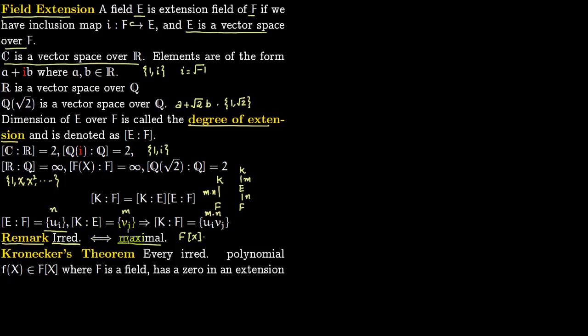then it has to be generated by a polynomial of lesser degree which will contradict irreducibility. The definition of irreducibility automatically implies it is maximal because otherwise we will have to generate it with a polynomial of lesser degree.